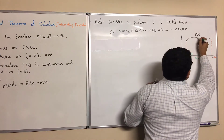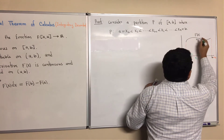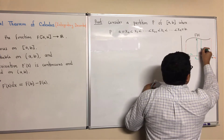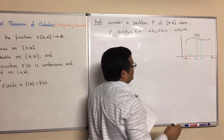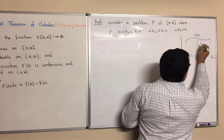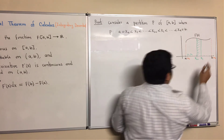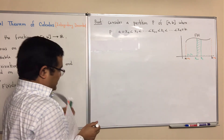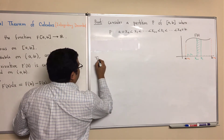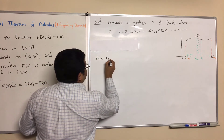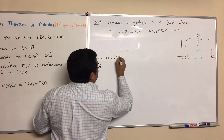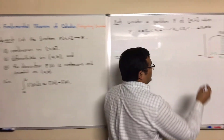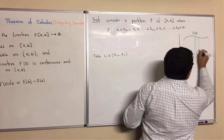So we consider the interval from x(i-1) to xi — this strip. Now take any point CI on the interval [x(i-1), xi]. Suppose this is CI.